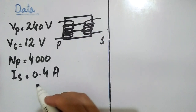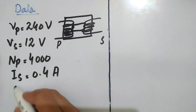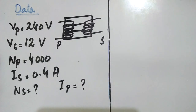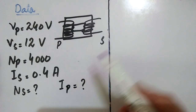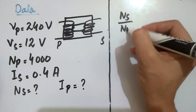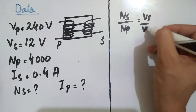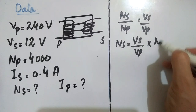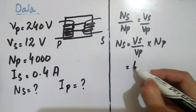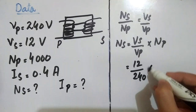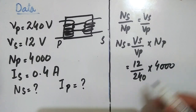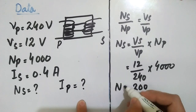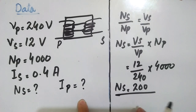We have to find: (1) number of turns in secondary coil Ns, and (2) primary current Ip. We use the relation: Ns/Np = Vs/Vp. Rearranging: Ns = (Vs/Vp) × Np. Substituting: Vs = 12, Vp = 240, Np = 4000. Solving: Ns = (12/240) × 4000 = 200. So the number of turns in the secondary coil is 200.